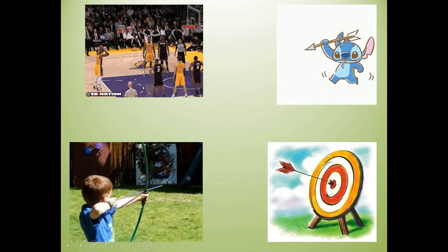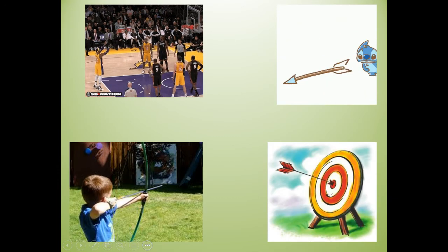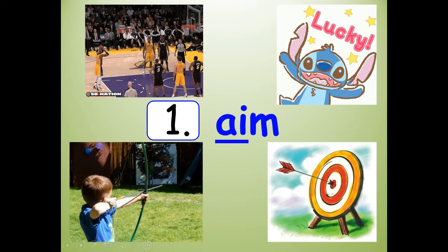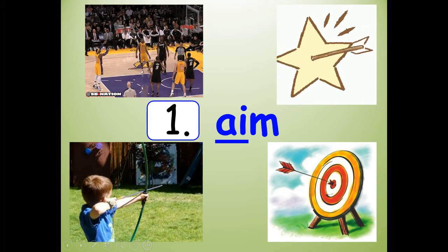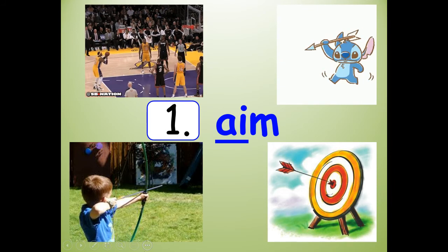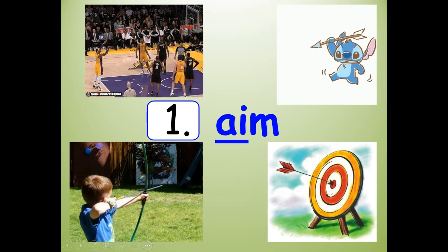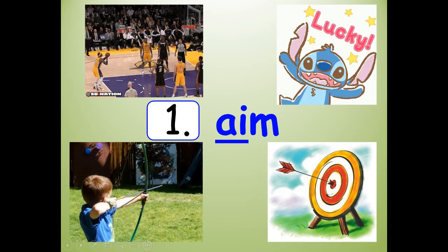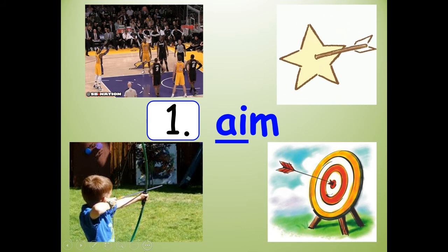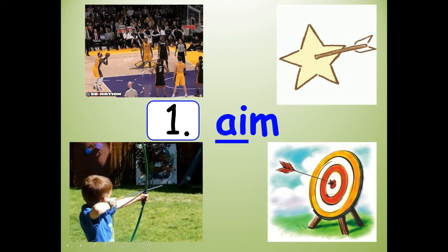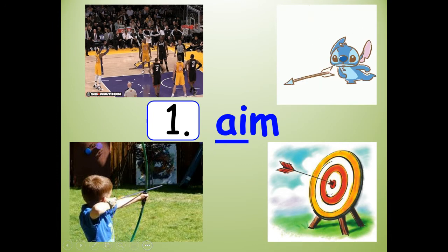Number one. The A-I says A in aim, so spell it: A-I-M. Aim. Stretch it — aim. Shrink it — aim. A-I-M. And if you need to, push pause if I'm going too quickly.